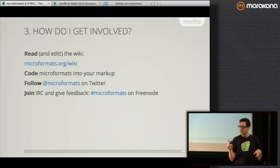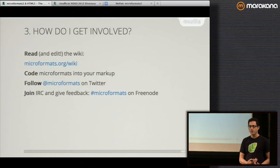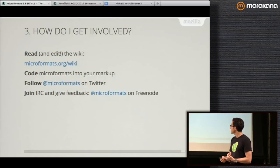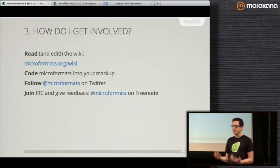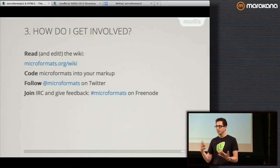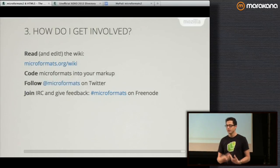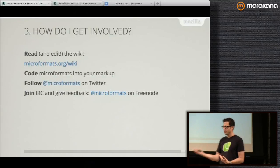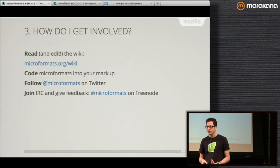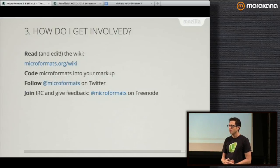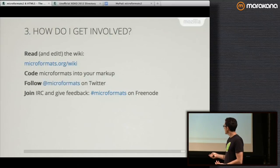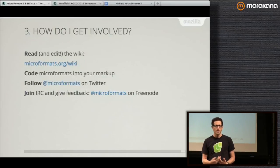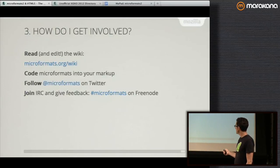How do I create a new microformat or get involved? Three ways. First, read, edit, and contribute to the microformats wiki. For example, someone wanted to develop a wine microformat — start by documenting how people publish wine information today, see what existing wine formats can be reused or leveraged, keeping it all open and in the public domain. Second, there's a microformats Twitter account. Most importantly, a lot of discussions happen on the pound-sign microformats channel on Freenode IRC.